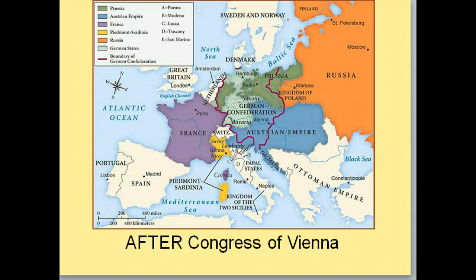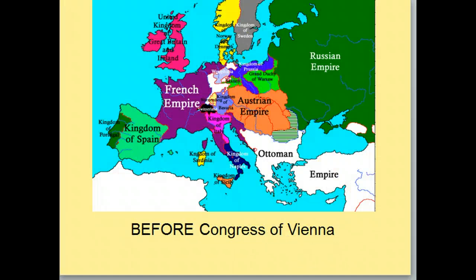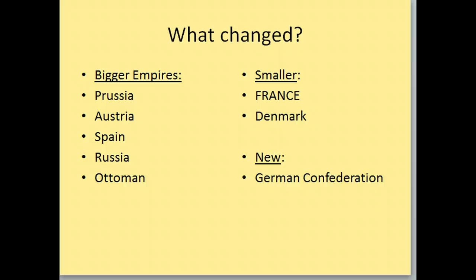The Kingdom of Sardinia — Piedmont-Sardinia — is formed from what had been owned by France. And then the German Confederation is formed, and that's going to be important for our next part of the unit when we talk about German unification.